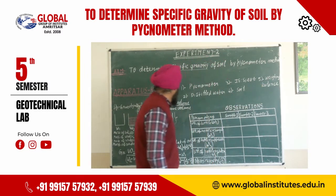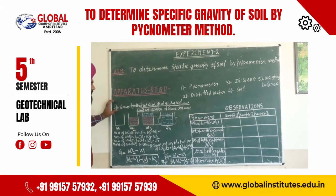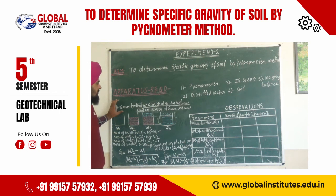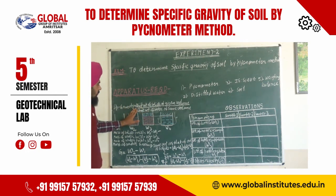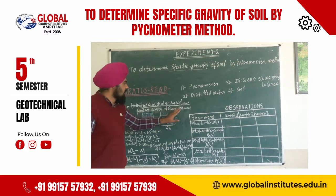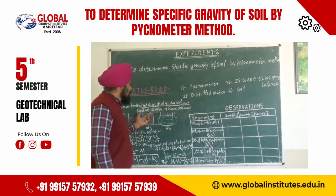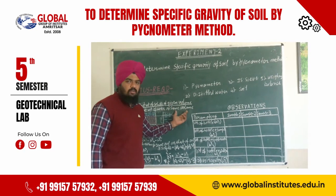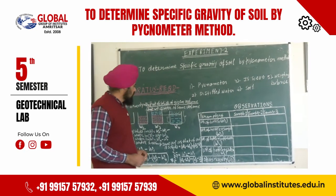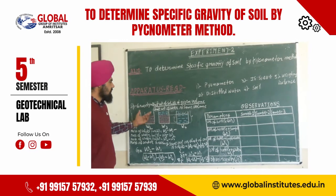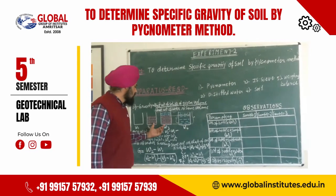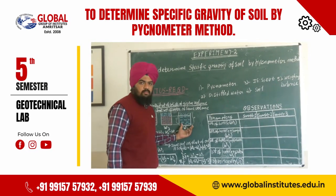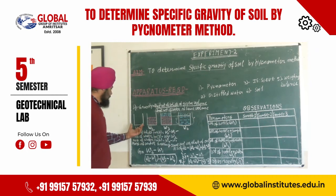Next we are going to see in a formal definition what specific gravity means. Specific gravity is the unit weight of solids of a given volume to the unit weight of water of the same volume. We are going to study how these two terms are related from the pictorial form.